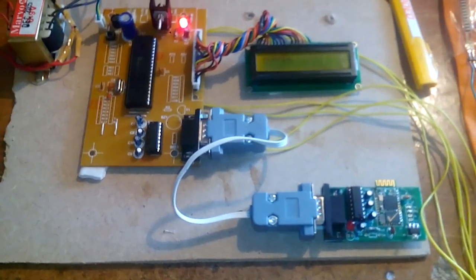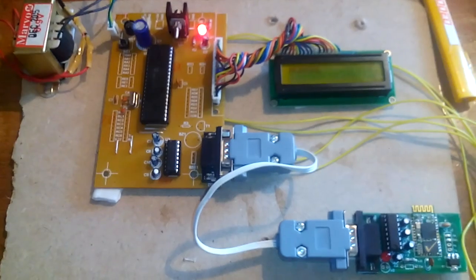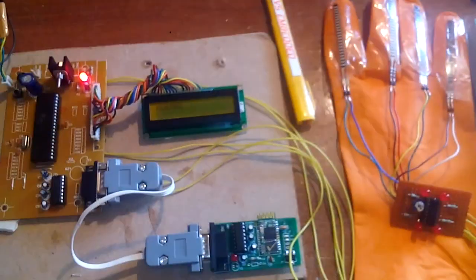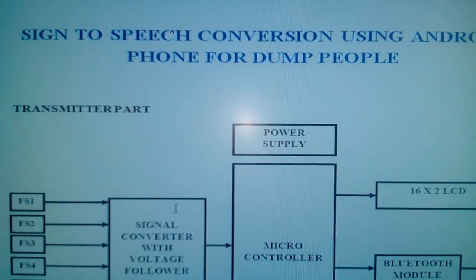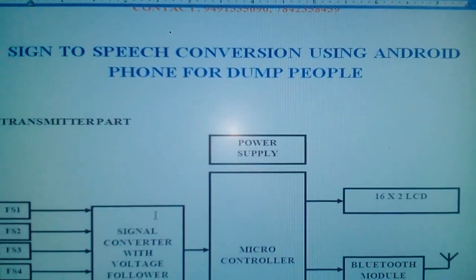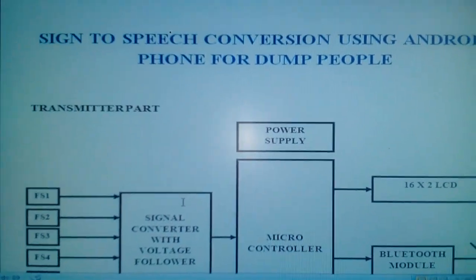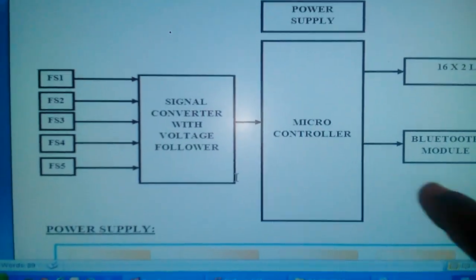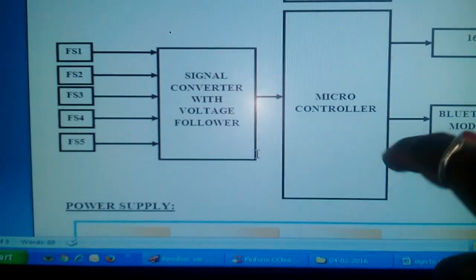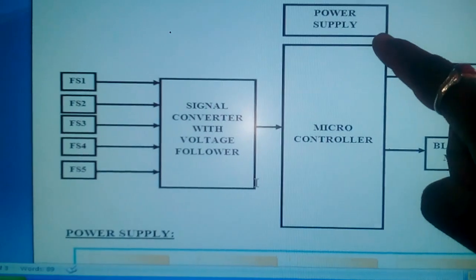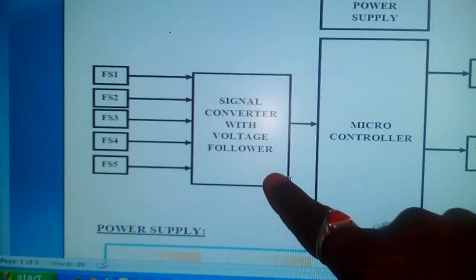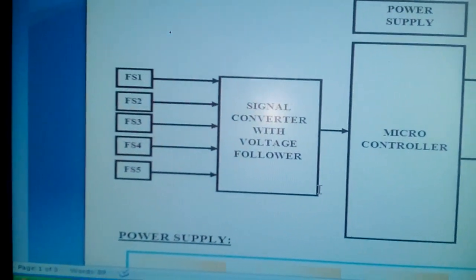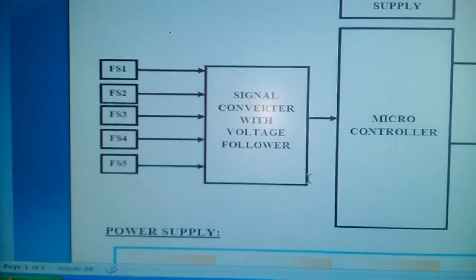Good morning, we are from SVS Embedded. The project title is Sign to Speech Conversion using an Android phone for dumb people. In this project I am using a PIC16F877A microcontroller, one power supply section, and an LM324 operational amplifier to amplify the signal. I used four flex sensors — 3.2 inch flex sensors.